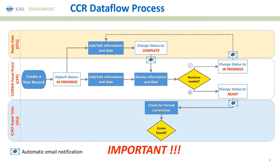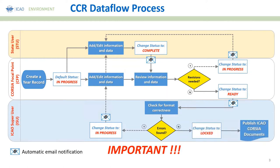Based on the review by the ICAO super user, if mistakes or errors are found, the status of the year record can change back to 'in progress', with an automatic email notification to the Corsia focal point that further information must be provided or corrected. If there are no errors and the data is correct, the ICAO super user will lock the information, which will then be used to produce ICAO Corsia documents. This process is summarized in leaflet A, including a diagram with descriptions of the key steps.